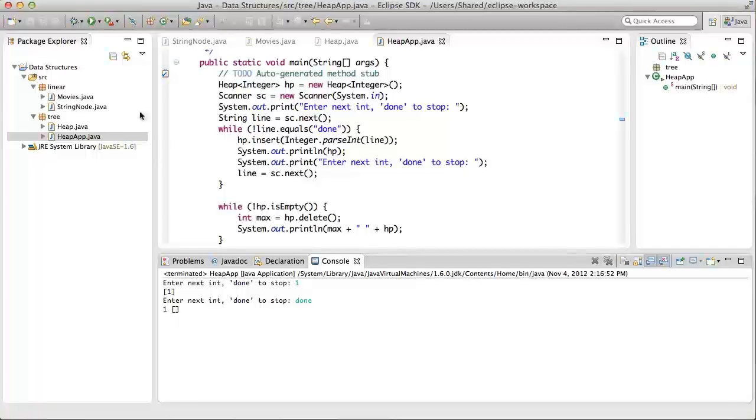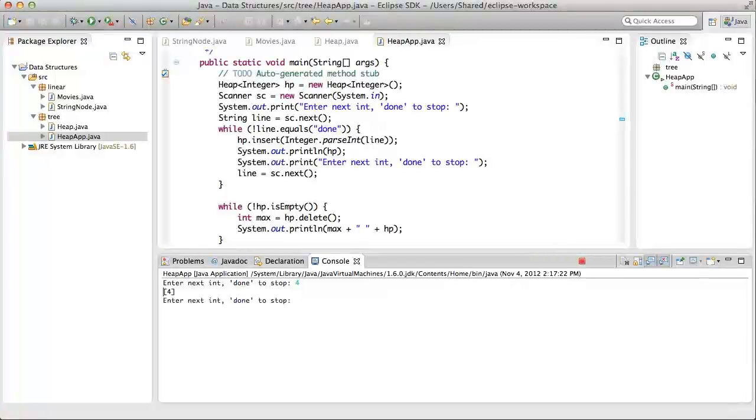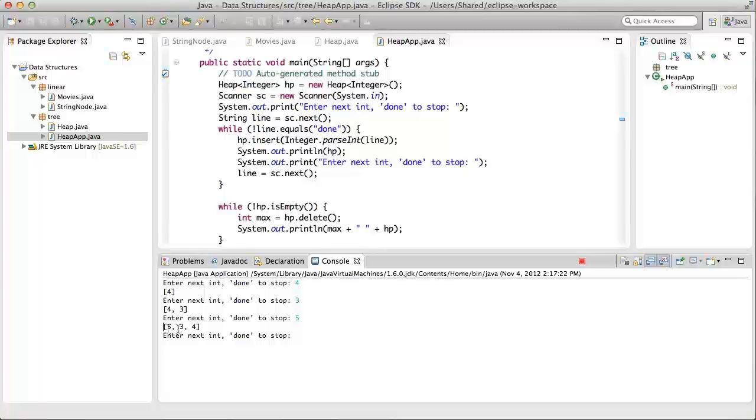Let's do this one more time, entering a few more things. Let's start with four, then three, and then five. Notice in the heap array listing that five is now at the front of the array, which means the top of the heap, followed by three and four. And you can use the array listing to imagine the heap structure, and you know that five is at the top, its left child is three, and its right child is four.